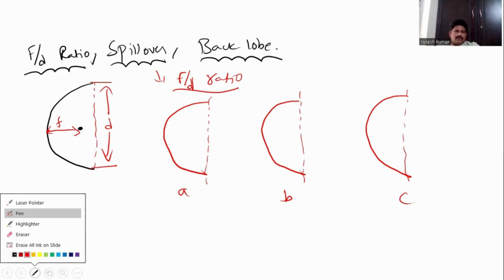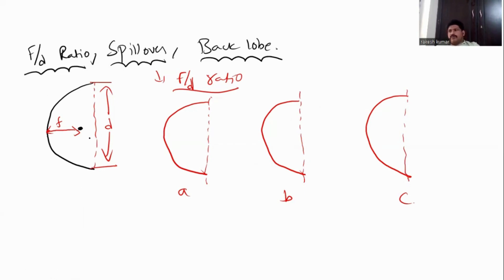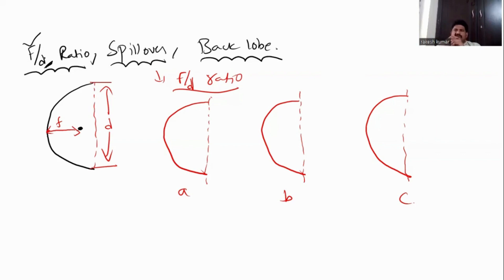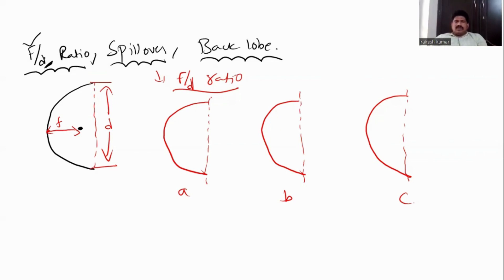So, what happens if there are three cases? Where can I keep my feed point? The ratio of focal length F to the diameter of the aperture is another important design constant for getting a pencil beam. Pencil beam means which is used for getting high gain — it radiates particularly in one direction. That is called a pencil beam.